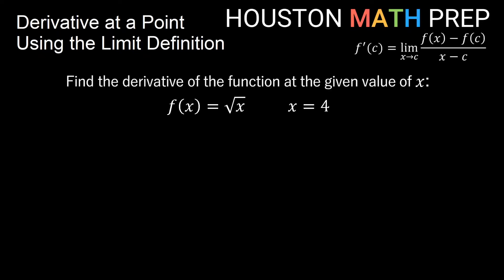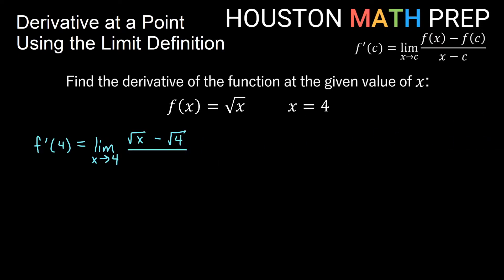In this video we're going to use this limit definition. We're going to find the derivative of f(x) = √x at x = 4. So f prime of 4 equals the limit as x approaches 4 of f(x) minus f(c). f(x) is √x, and f(c) is f(4) which is √4. On the bottom in the denominator we simply have x minus c, which is x minus 4.